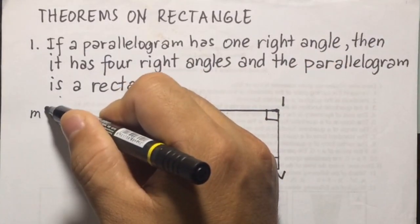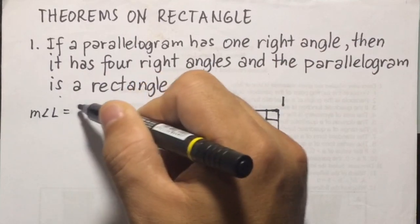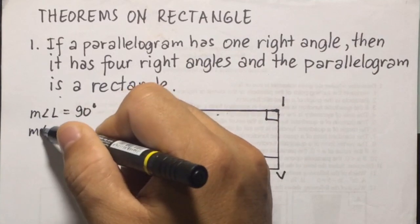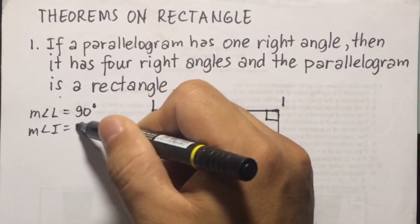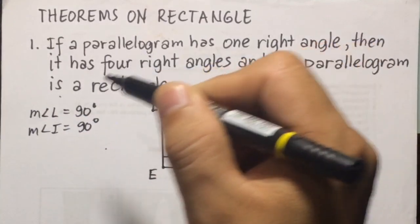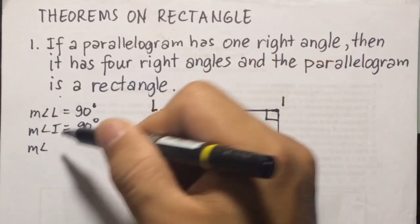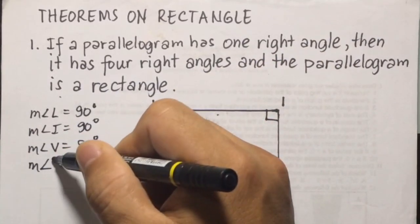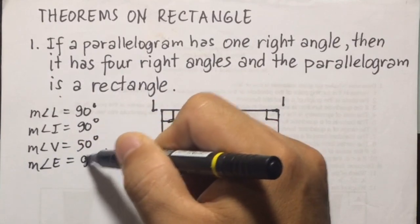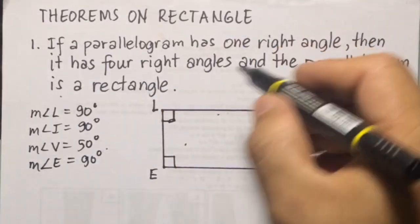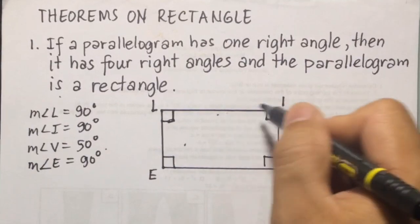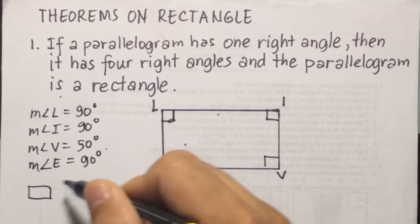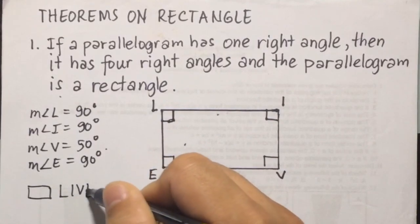So, measure of angle L here is equal to 90, or right angle. Measure of angle I will also be 90 degrees. Then, measure of angle V is also 90, and measure of angle E is also 90 degrees. And we can say that this parallelogram here is a rectangle. So, this is rectangle L-I-V-E.